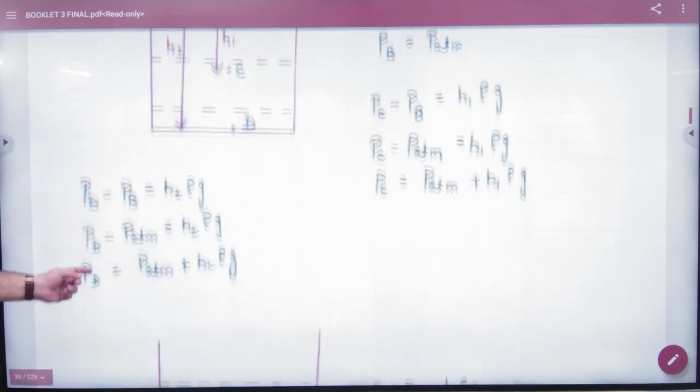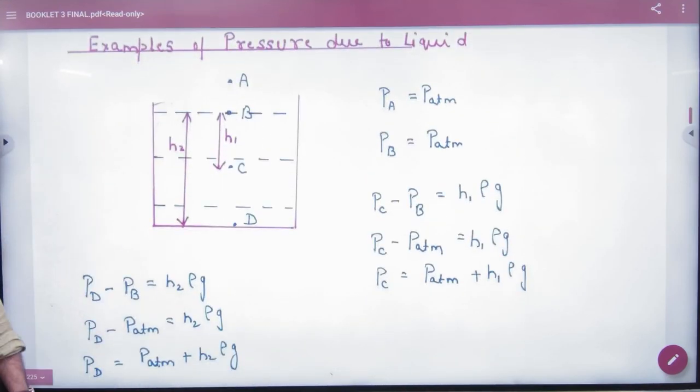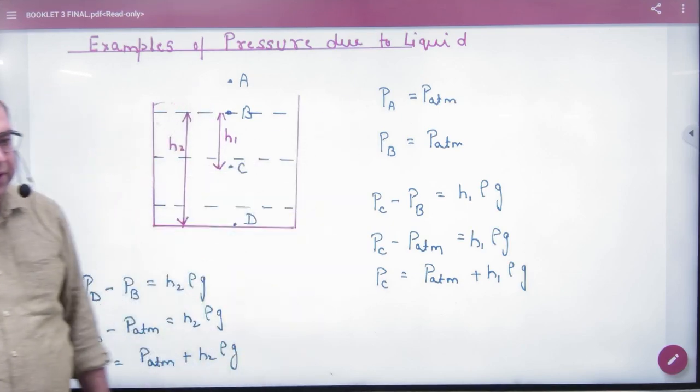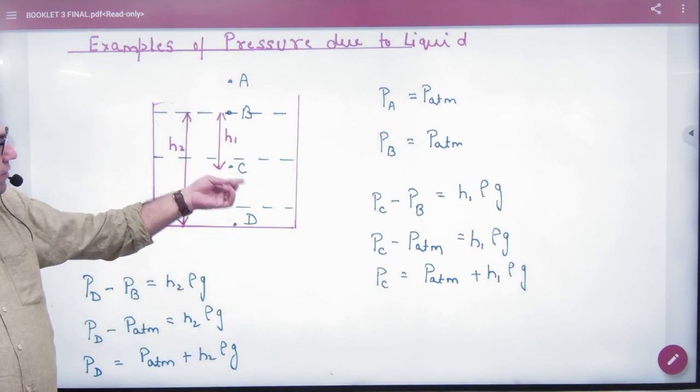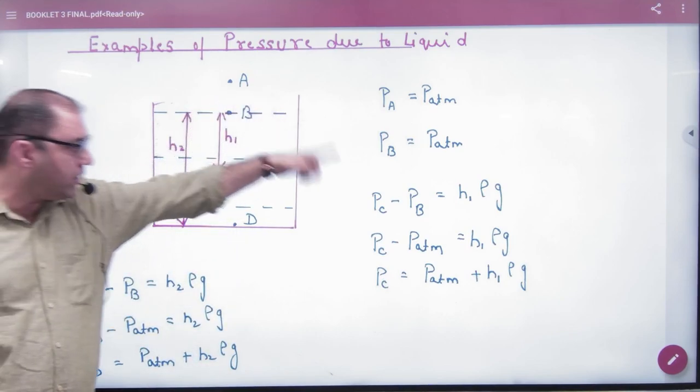Then we did work on this process. If we think that some points are given: A point of pressure is P-atmosphere, B point of pressure is P-atmosphere, and the pressure difference from C to B is H-Rho-G.